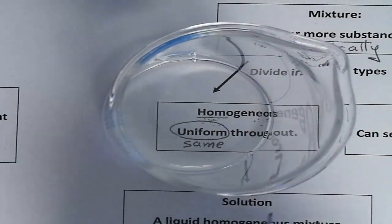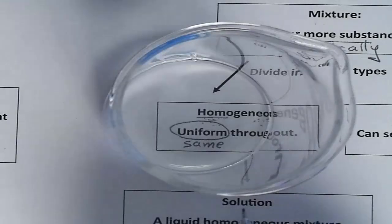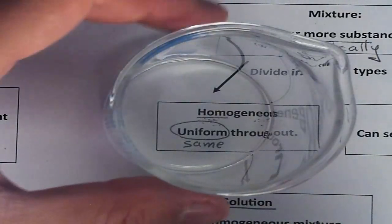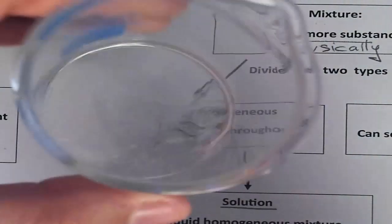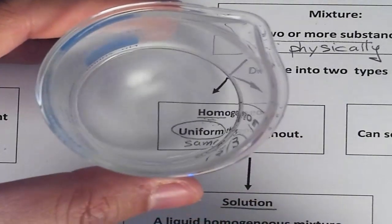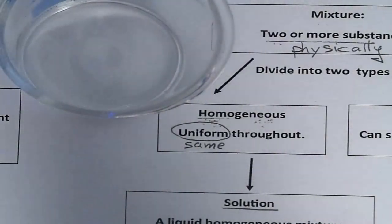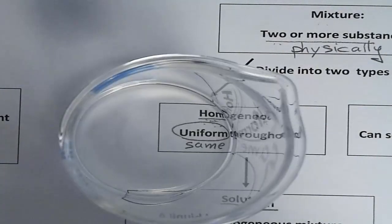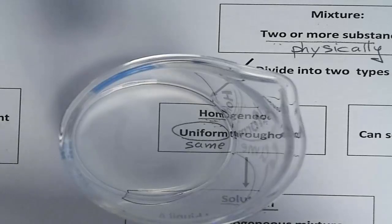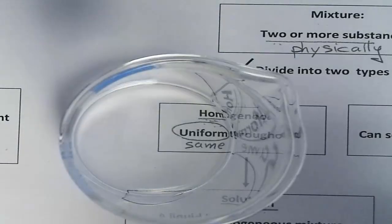In this case, we have something very specific — it is a solution. When we have a solution, it is a liquid homogeneous mixture. The word solution is basically describing a homogeneous mixture in a liquid form, or state of matter.